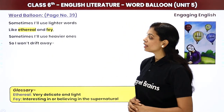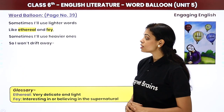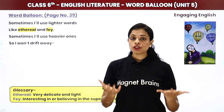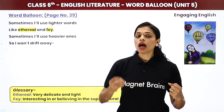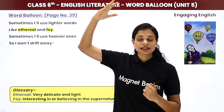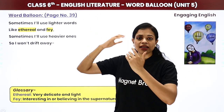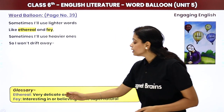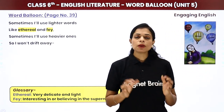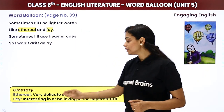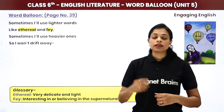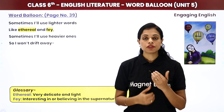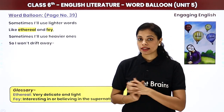'Sometimes I'll use lighter words like ethereal and fey. Sometimes I'll use heavier ones so I won't drift away.' She is saying that since the balloon is made of words, if you use very heavy or tough words the balloon becomes heavy and won't go high. But when she wants to soar high, she will use lighter words like ethereal — meaning very delicate and light — and fey, which means interested in or believing in the supernatural.